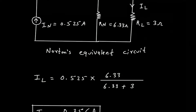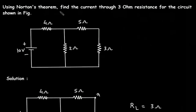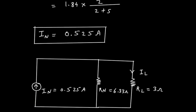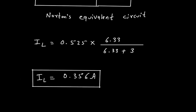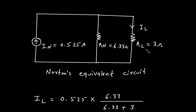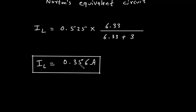What we have to find: using Norton's theorem, find the current through 3 ohm resistance for the circuit shown in figure. So by using Norton's theorem, the current through the 3 ohm resistance is 0.356 ampere. This is the final answer. Thank you.